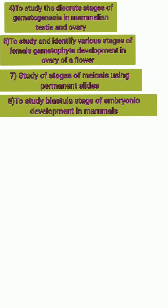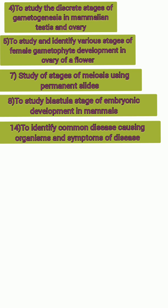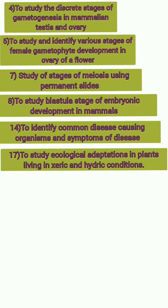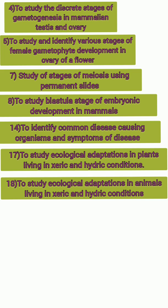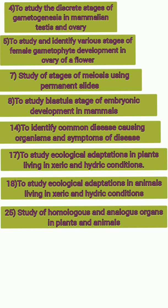Practical 4 is to study the discrete stages of gametogenesis in mammalian testes and ovary. Practical 5 is to study and identify various stages of female gametophyte development in the ovary of a flower through permanent slides. Practical 7 is study of meiosis using permanent slides. Practical 8 is to study the blastular stage of embryonic development in mammals through slides. Practical 14 is to identify common disease-causing organisms and symptoms of the disease. Practical 17 is to study ecological adaptation in plants living in xeric and hydric conditions through charts. Practical 18 is to study ecological adaptation in animals living in xeric and hydric conditions through charts. Practical 25 is study of homologous and analogous organs in plants and animals through charts.